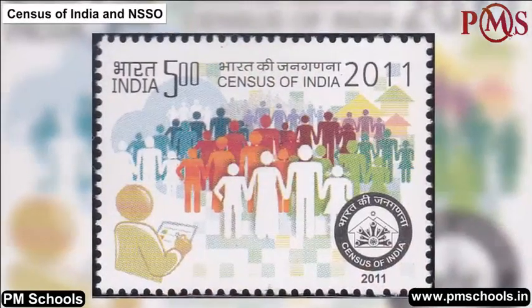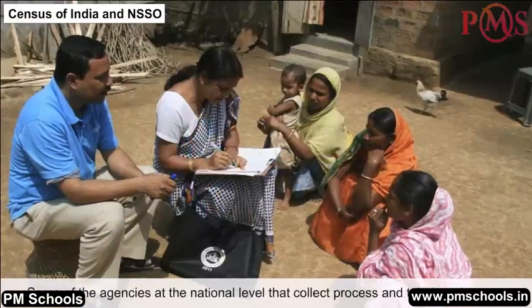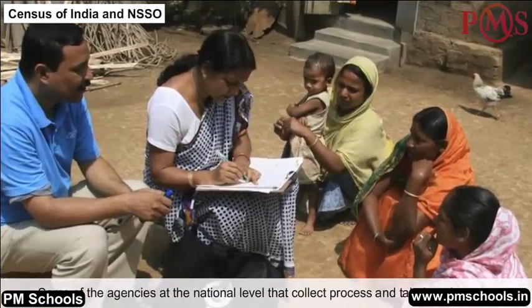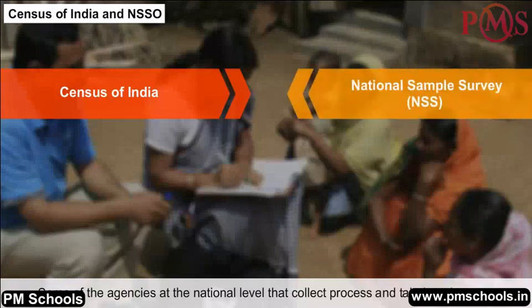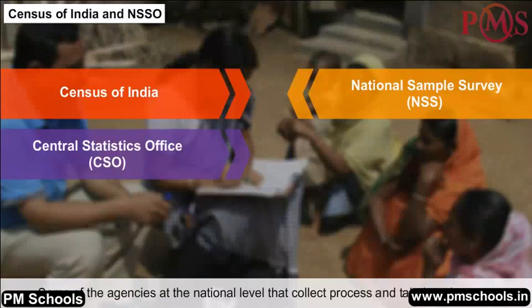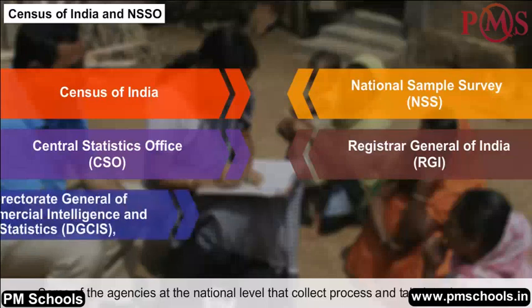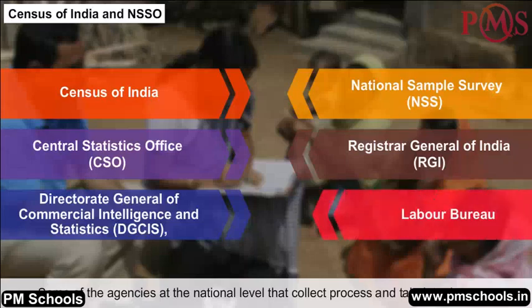Census of India and NSSO: Some of the agencies at the national level that collect, process, and tabulate data are the Census of India, National Sample Survey (NSS), Central Statistics Office (CSO), Registrar General of India (RGI), Directorate General of Commercial Intelligence and Statistics (DGCIS), and Labour Bureau.